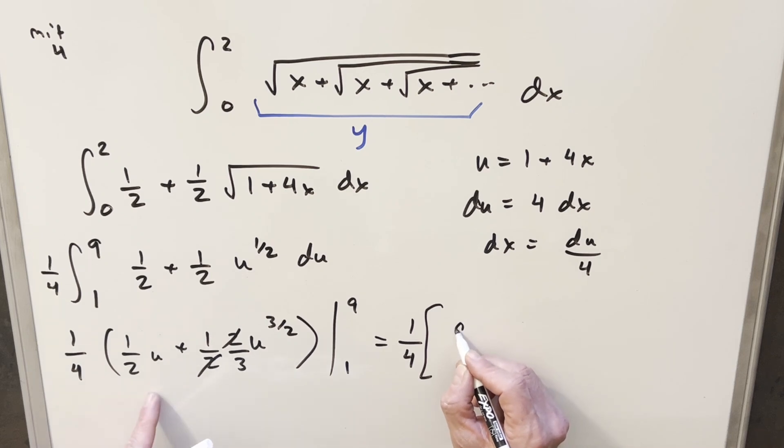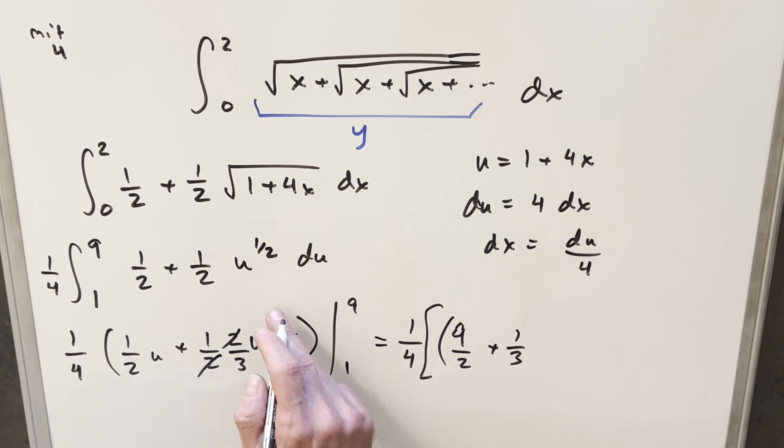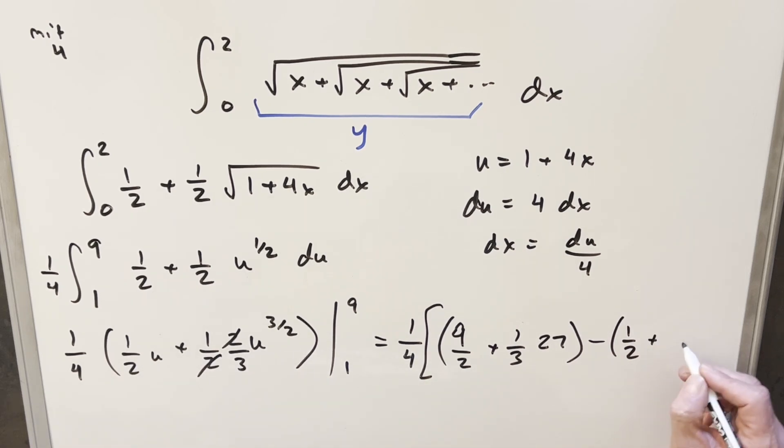Plugging in 9, we get 9 over 2, then 1 third. For the second term, plugging 9 in: square root of 9 is 3, and 3 to the 3rd gives 27. Evaluating at 1: the first part gives 1 half, and the second part gives plus 1 third. 27 divided by 3 is 9.